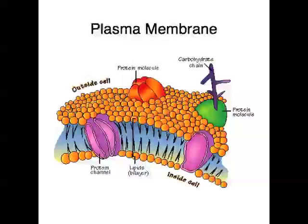The plasma membrane is what's called a phospholipid bilayer, which means it's basically two layers of phospholipids, or two layers of fats. Phospholipids have two ends: a hydrophilic, or water-loving head, and a hydrophobic, or water-hating tail. The hydrophilic end goes on both the outsides of the cell membrane, and the hydrophobic ends are squished together in the middle of the plasma membrane — that is how it forms a bilayer.